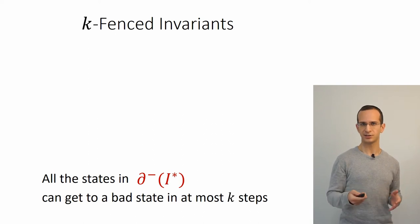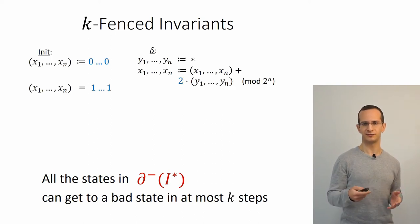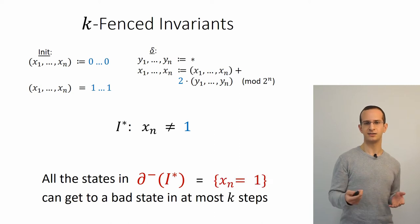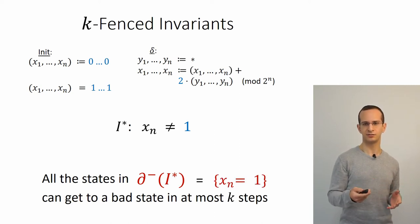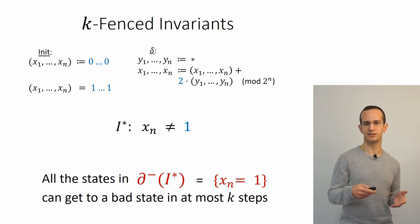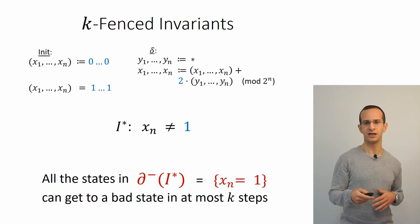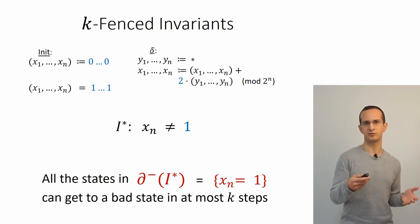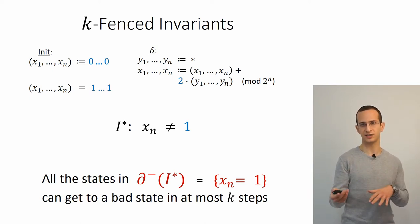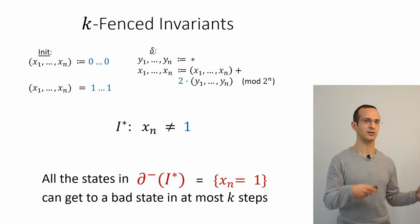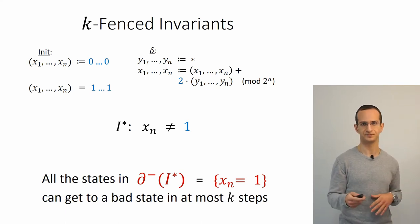In the example system, with the invariant that the least significant bit is never 1, this is the boundary, and every state in the boundary can get to the bad state in just one step. So this invariant is K-fenced for every K greater or equal to 1. The paper also has more complex examples where the boundary reaches a bad state in k steps but other states outside the invariant don't.